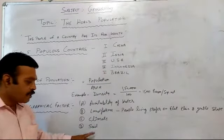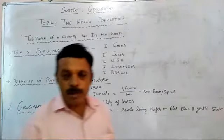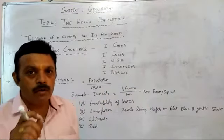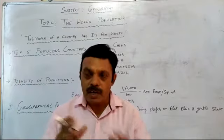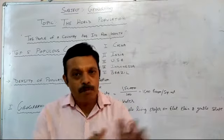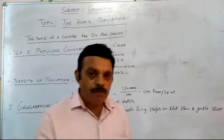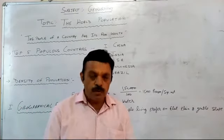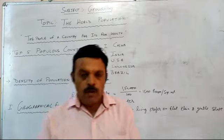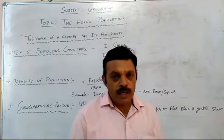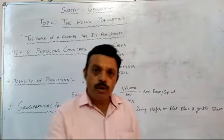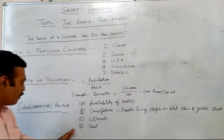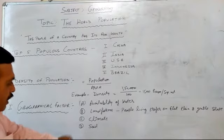The fourth factor is soil. Soil is an important part of the geographical factors for population growth of any area, country, or place. Soil is also important for living, agriculture, and shelter for human beings. These are the important geographical factors.